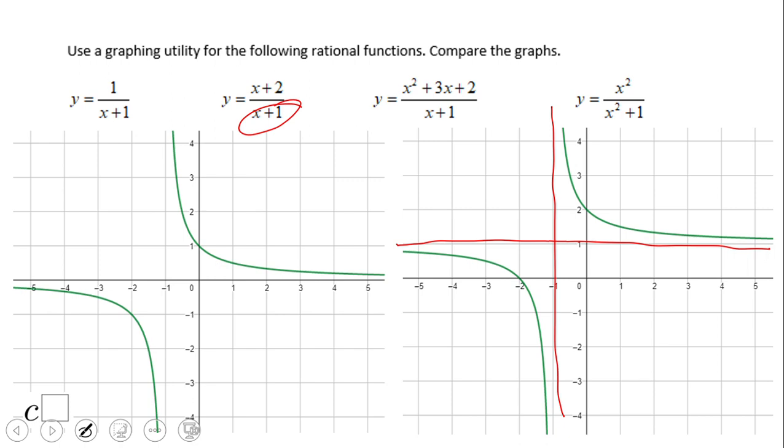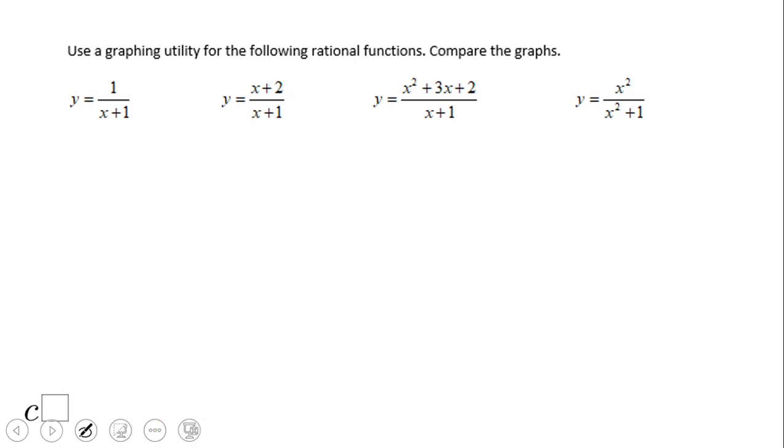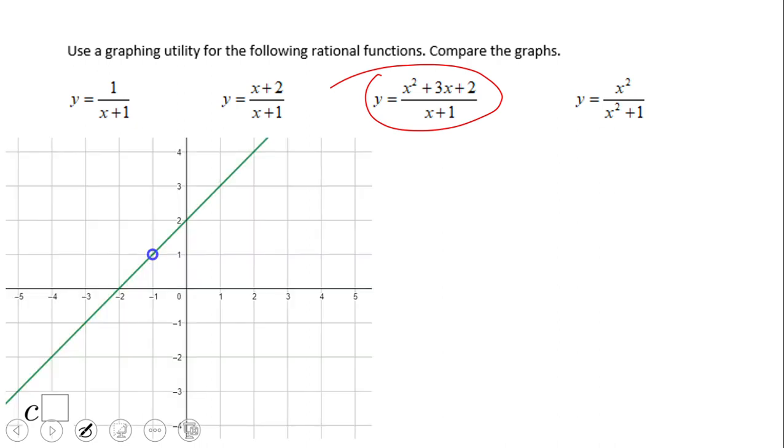The interesting graph will be the third one. This one, look at here. The third one is a line. If you take a look, x squared plus 3x plus 2 over x plus 1, the numerator at the top of the fraction can be factored out. That will be x plus 1 times x plus 2, and over x plus 1 we can simplify.